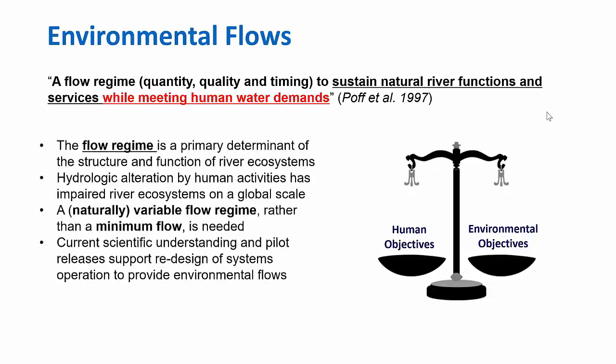The flow regime — the water quantity, quality, and timing — is a primary determinant of how a river functions and the functions that are beneficial for ecosystems.